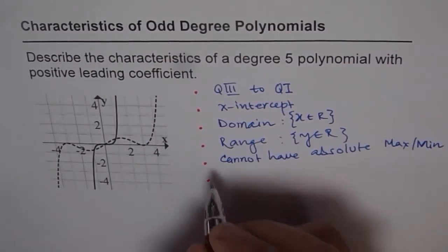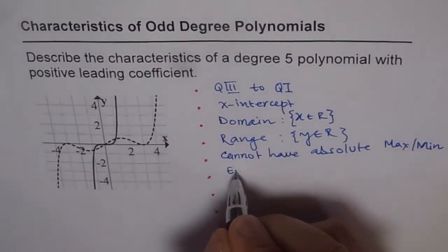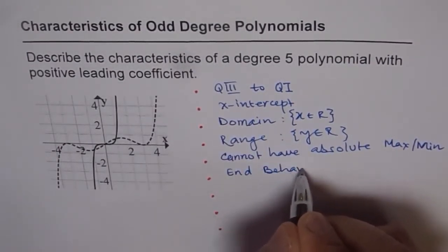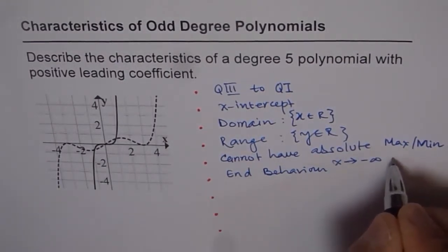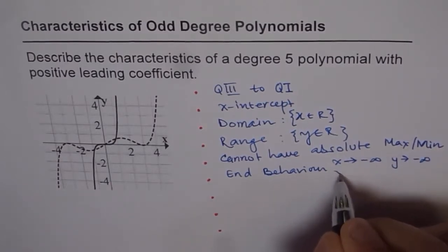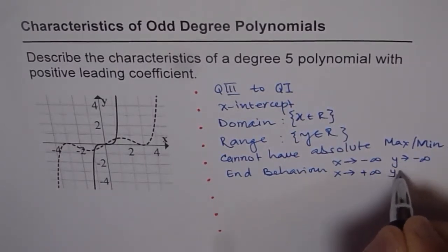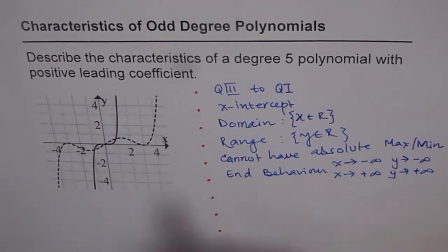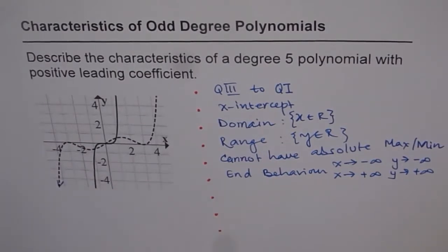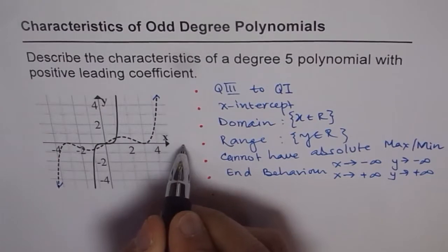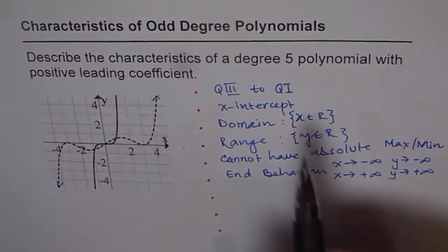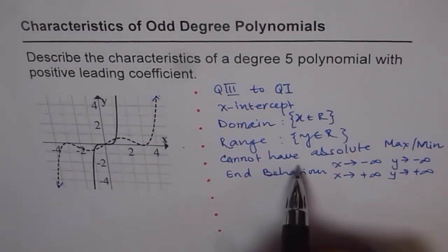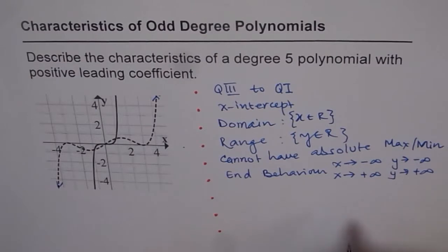Let's describe the end behavior. As x approaches negative infinity, y approaches negative infinity. And as x approaches positive infinity, y approaches positive infinity. That is why the domain and range are both all real numbers, and why the function cannot have any absolute maximum or minimum.